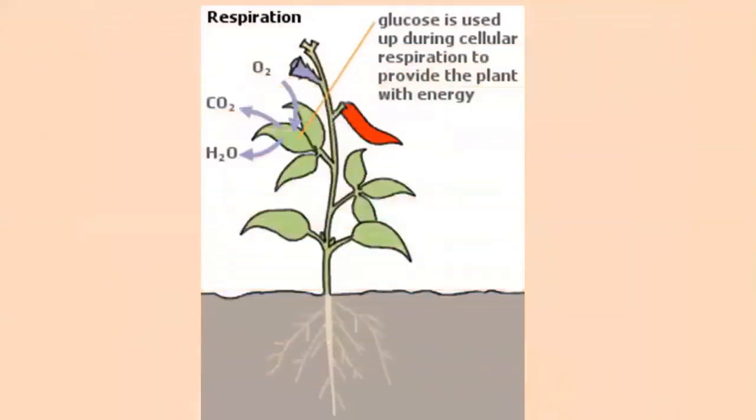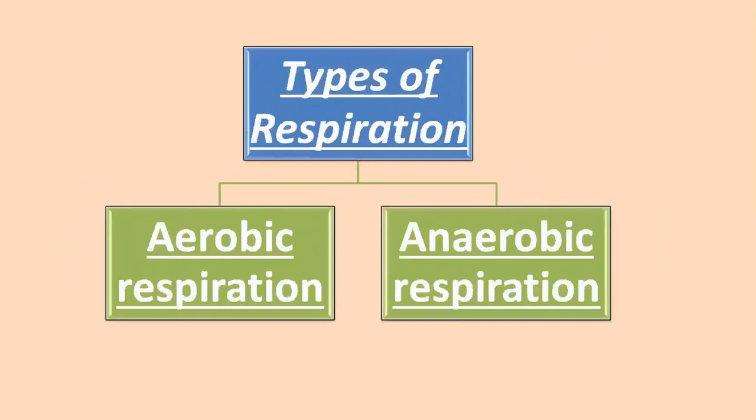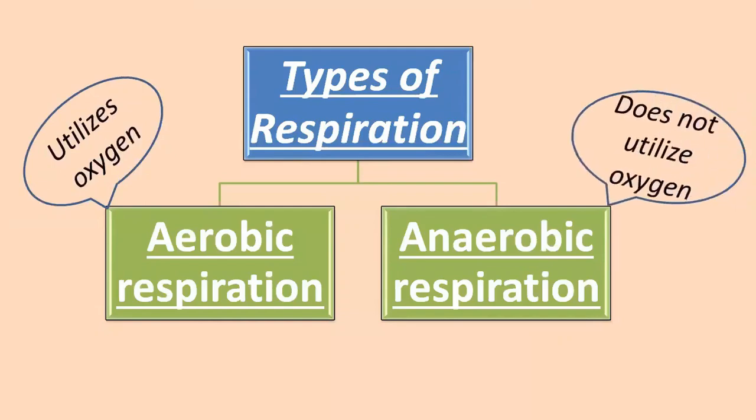So the glucose molecules synthesized through photosynthesis act as the basic fuel for cellular respiration. Just like animals, plants also have two types of respiration process. The first one is aerobic, whereas the second one is anaerobic. Aerobic respiration utilizes oxygen, whereas anaerobic respiration does not utilize oxygen.